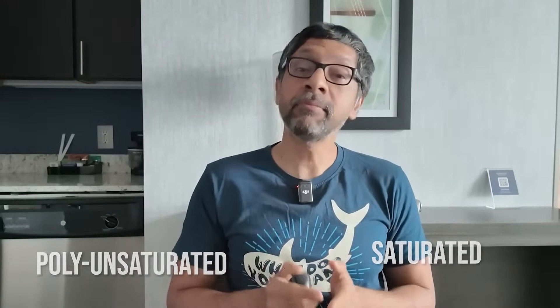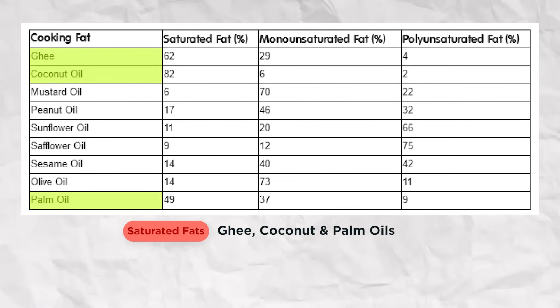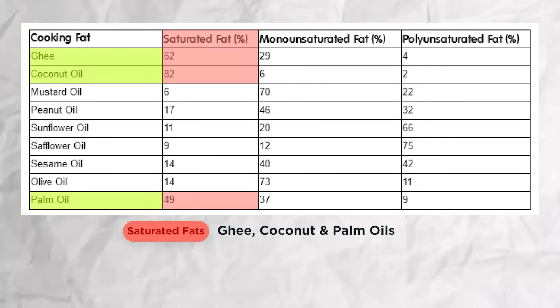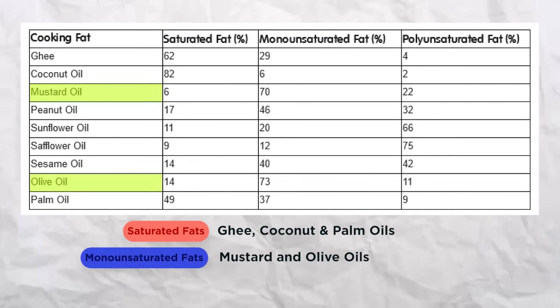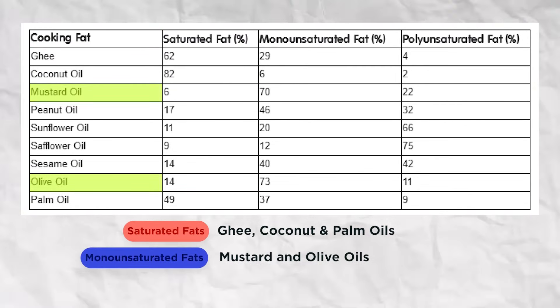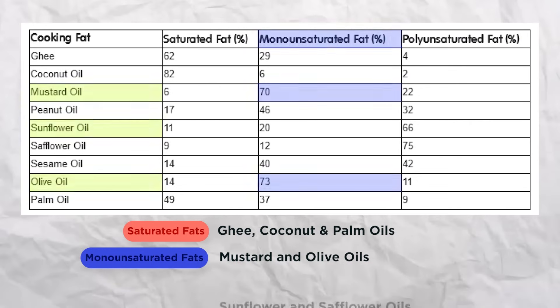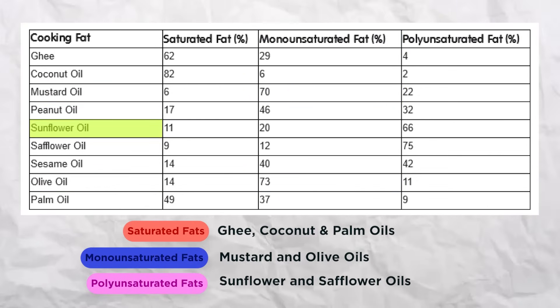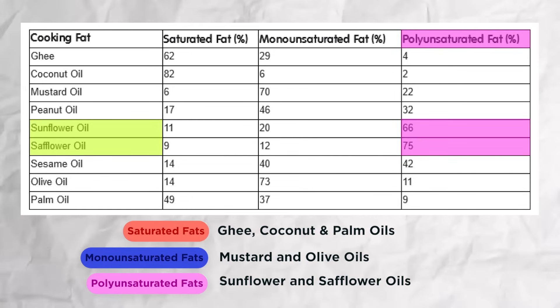Here is a table of common cooking fats used in India and their mix of saturated, monounsaturated and polyunsaturated fats. Ghee, coconut oil and palm oil are called saturated. Mustard and olive oil are called monounsaturated, while sunflower and safflower oil are called polyunsaturated.